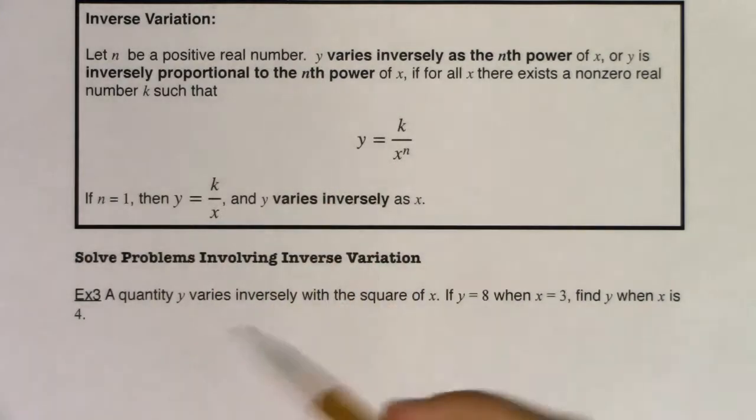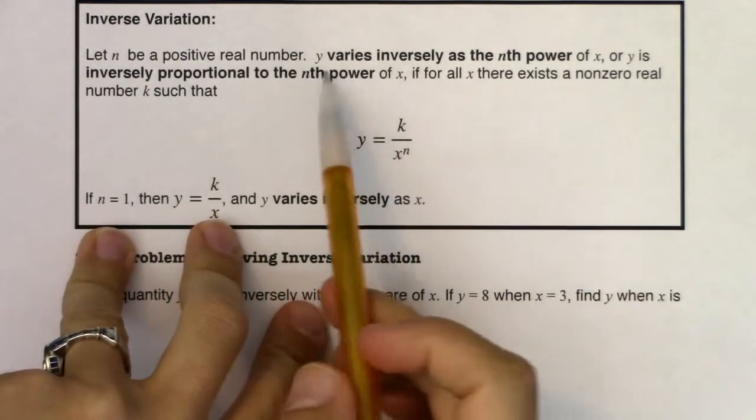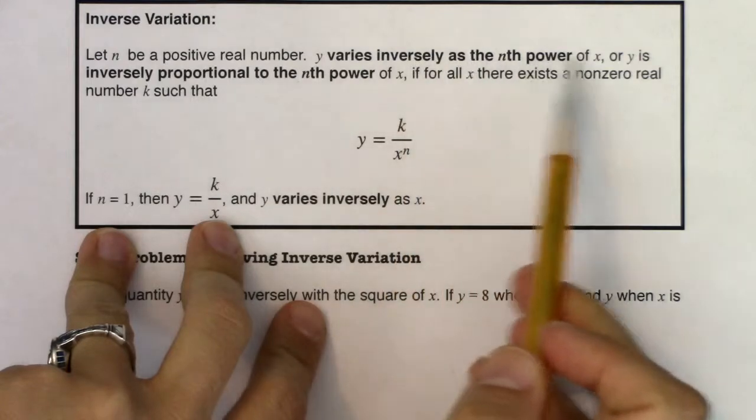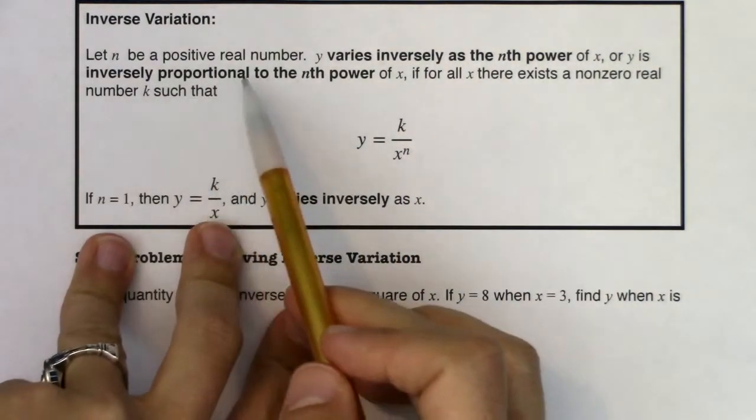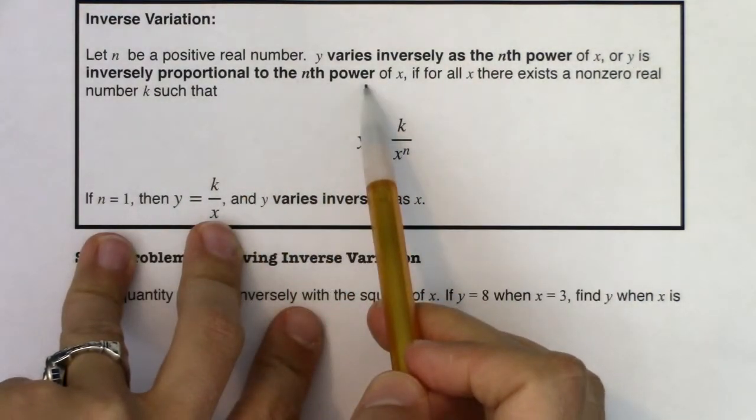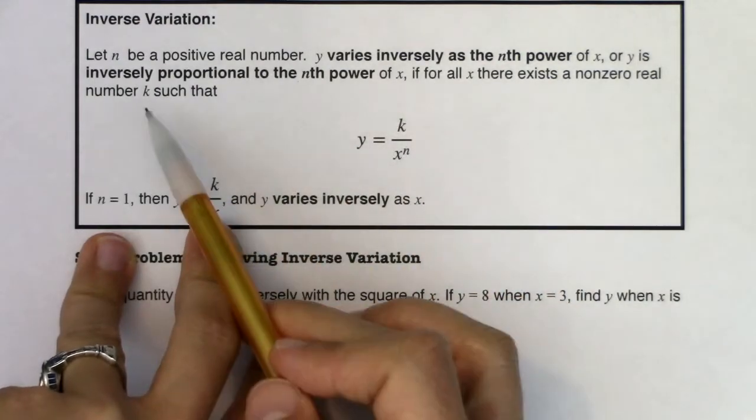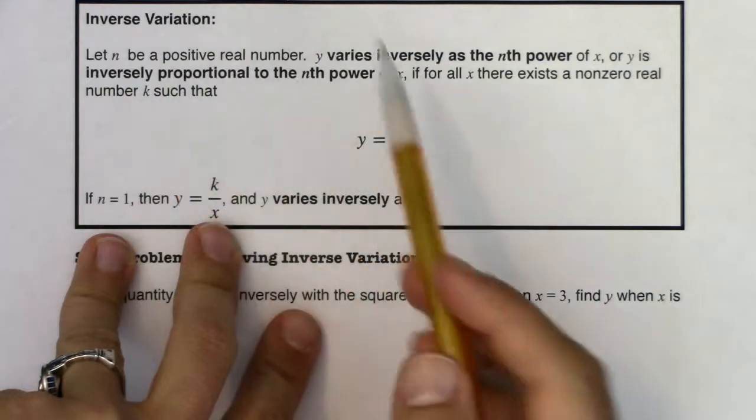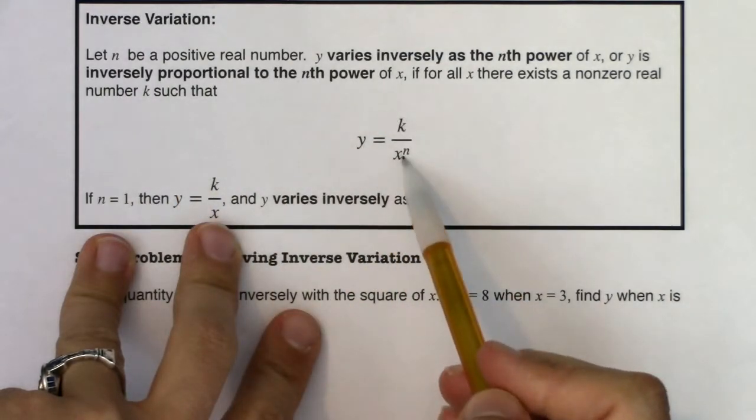So we're going to let n be a positive real number and then we will start using this phrase: y varies inversely as the nth power of x, or y is inversely proportional to the nth power of x. If for all x there exists a nonzero real number k such that y equals k over x to the n.